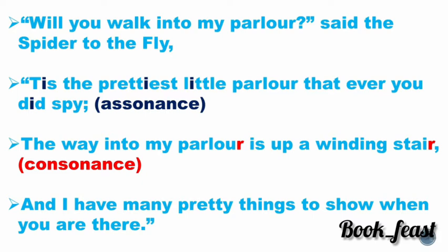'And I have many pretty things to show when you are there.' Once you come into the parlor, there are many things to talk about and show you. Assonance is the repeated occurring of the vowel sound — here 'prettiest,' 'little,' and 'it' are examples of assonance. For consonants, the repetition of the consonant sound — 'parlor' and 'stair' are examples.